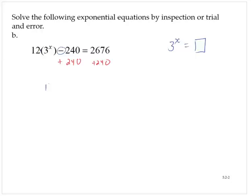So that would give me 12 times 3 to the x is equal to 2,916. And then I'll divide through by 12. And that gives me 3 to the x is equal to 243.